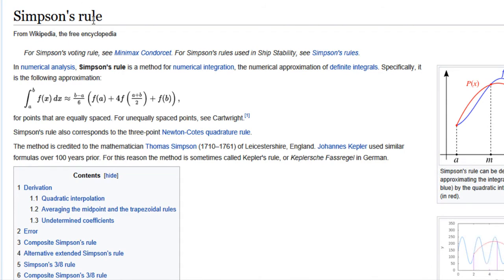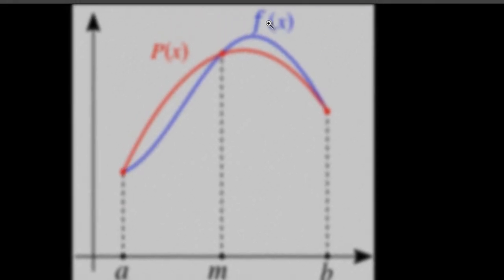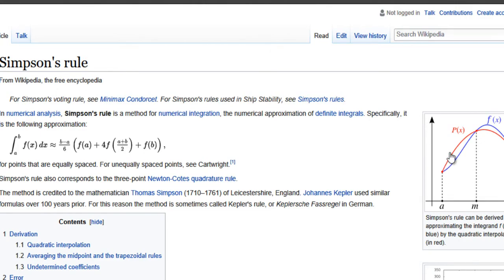On the Wikipedia page for Simpson's rule, if you have a function f of x represented by the blue curve, to evaluate its integral using Simpson's one-third approximation you approximate this blue curve using a parabolic or quadratic function — that is the red line. This gives you an approximate value of the definite integral by calculating the area under the red curve.